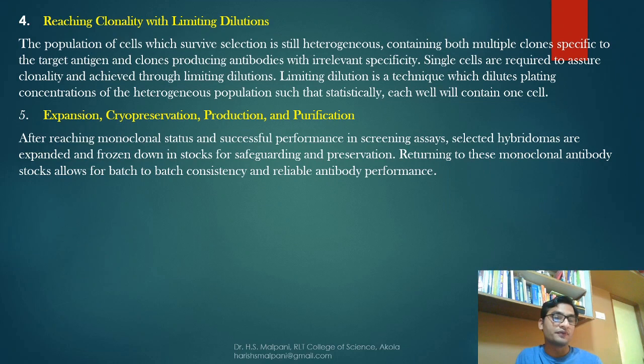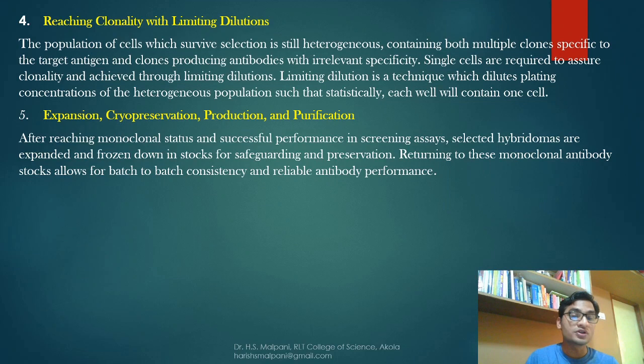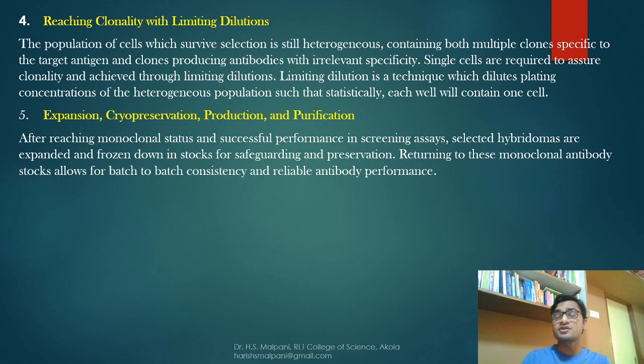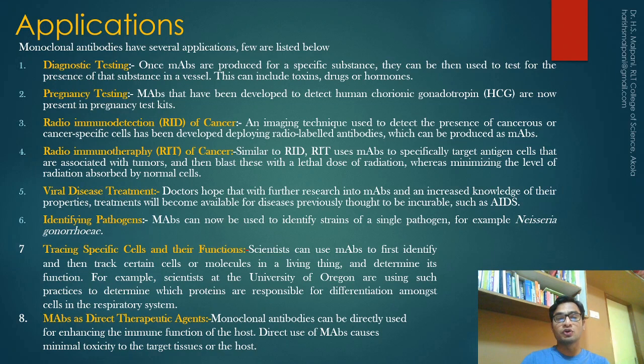Step five is expansion, cryopreservation, production, and purification. After reaching monoclonal status, successfully performing hybridomas are screened, assayed, selected, expanded, and frozen down in stock for safeguarding and preservation. This completes the method of monoclonal antibody production.